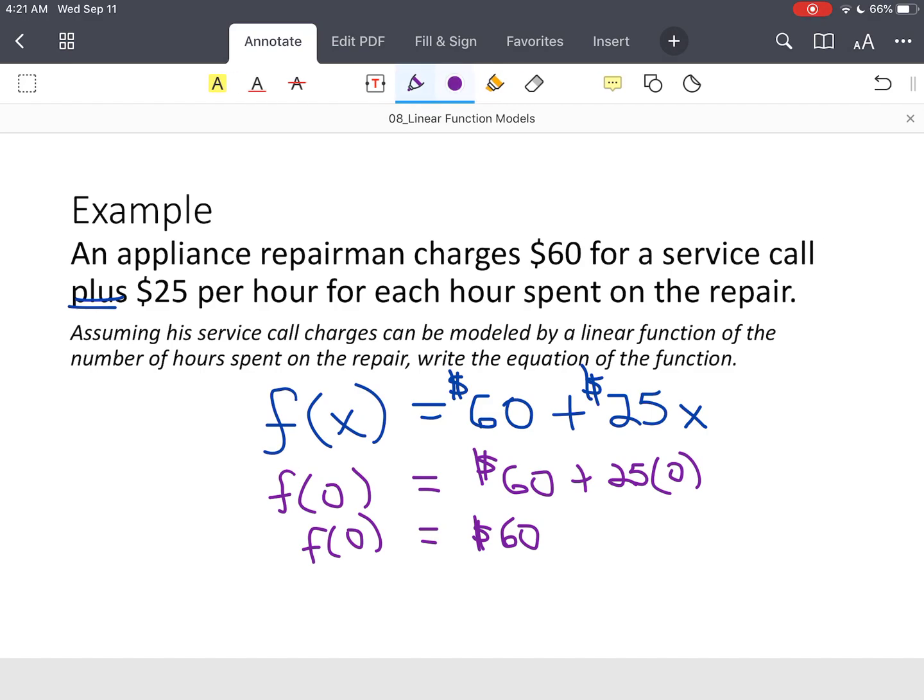Now, if the repairman was there for three hours, so for a three-hour job, it's still $60 plus $25 times three hours. That's $75, so this total is $135. So that's $60 just to come out plus $75 with respect to time, $135.